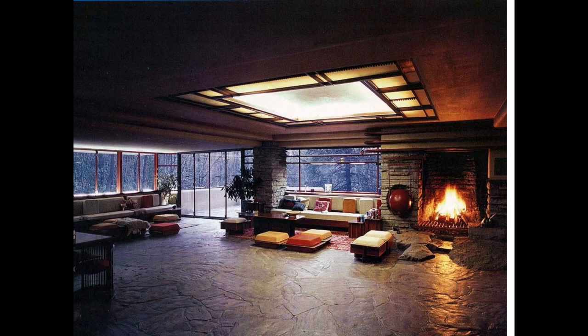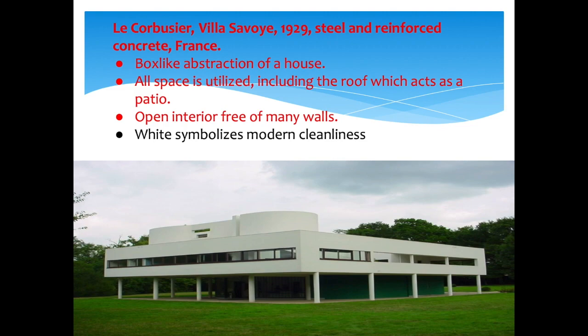Shifting to Europe at this time, we get something very sterile and very modern — the Villa Savoye by Le Corbusier, from 1929, a little earlier than Fallingwater. The building is made of steel and reinforced concrete and is almost like a box-like contraption. It is meant to be a modern house with a carport below, servant quarters, and a lot of open and free interior spaces with not a whole lot of interior walls.